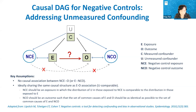In addition to unmeasured confounding, negative controls can also be used to address other types of bias, such as selection bias, misclassification, and information bias. This example shows how a negative control outcome plays a role to assess detection bias and differential outcome misclassification.